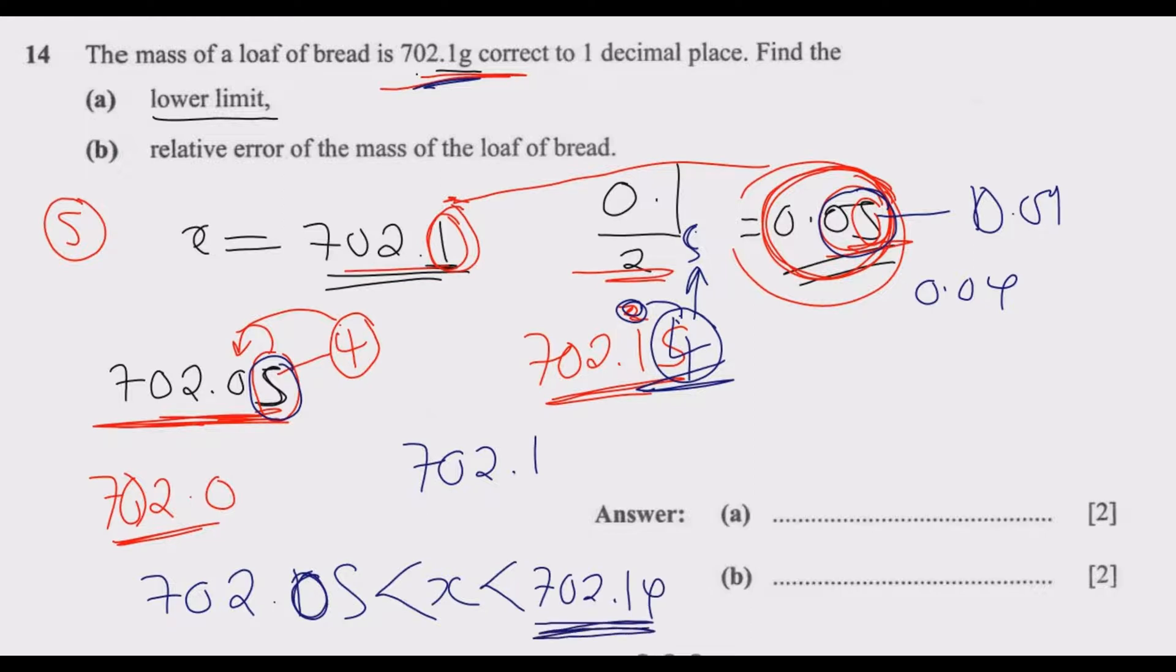This is the maximum, this is the minimum, which is the lower limit. The question is asking us to find the lower limit. So we have 702.05 as our answer.